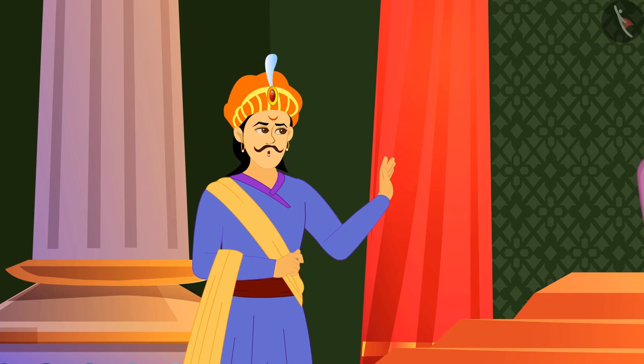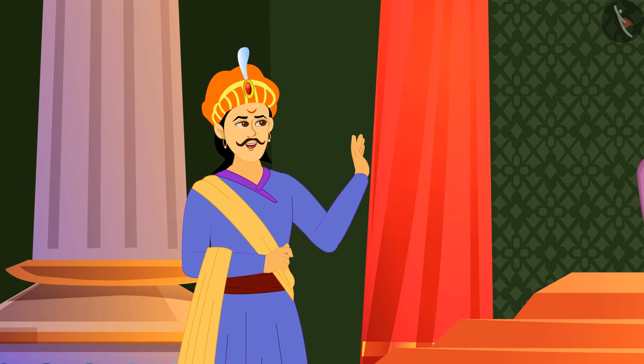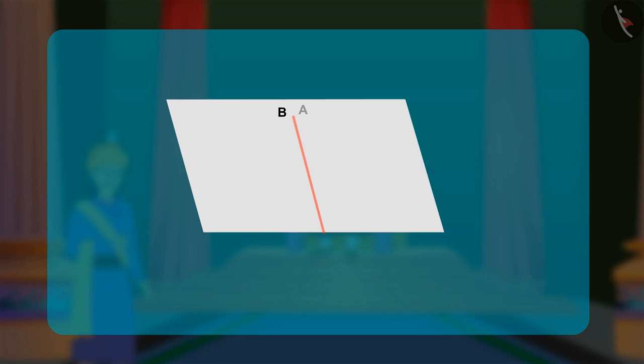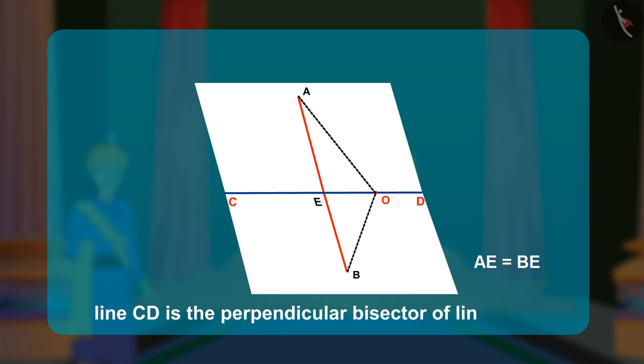Let me also show you the perpendicular bisector of a given line segment, said Birbal. He folds the paper so that the endpoints of the given line AB are coincident. He then carefully forms a crease CD and says, if you locate any point on the line CD, it will be equidistant from A and B. And hence, we can say that the line CD is the perpendicular bisector of line AB.